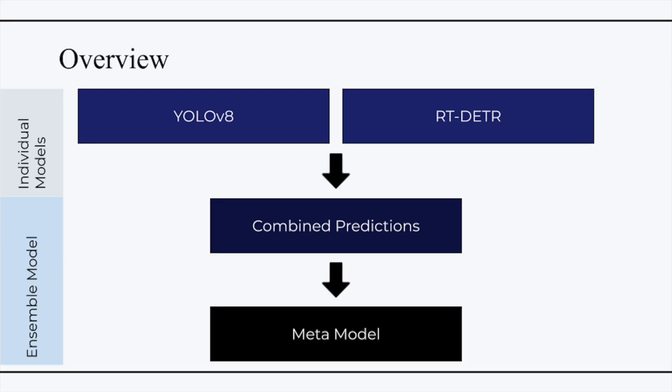This project aims to fine-tune two recent deep learning models, YOLO V8 and the Real-Time Detection Transformer, or RTDTR, for fabric defect detection. An ensemble model is created from the combined predictions by passing them into a meta-model, aiming to further optimize detection performance on fabric defects.